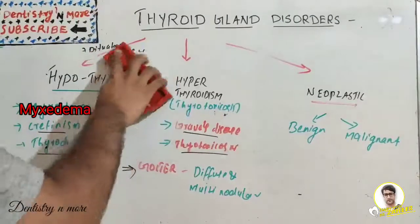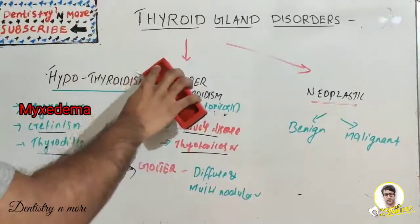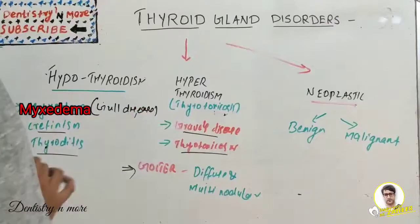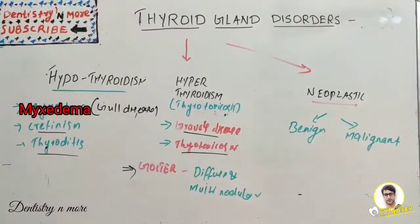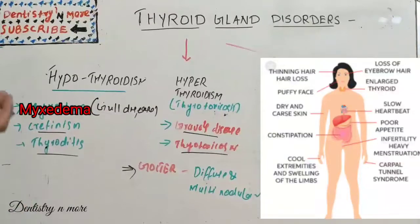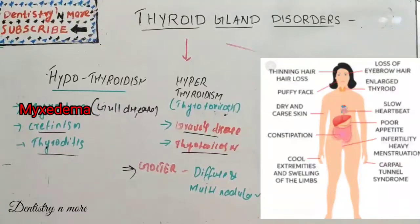The first condition is myxedema, a very commonly asked question. Myxedema is also known as Gull's disease — it is hypothyroidism developing in adult patients, where there is deposition of excess mucoprotein in the skin of the forearm, leg, and feet. The most striking features are enlargement of the thyroid gland (goiter), lack of interest in daily activities, physical and mental sluggishness, generalized fatigue, dull look, overweight, shortness of breath, and constipation with decreased sweating.